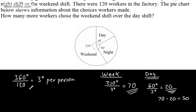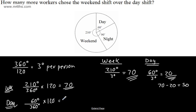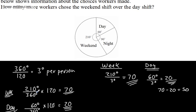Alternatively, you could use fractions. For the weekend: 210 over 360 multiplied by 120 gives 70. For the day shift: 60 over 360 simplifies to one sixth, and one sixth of 120 gives 20. So you can either work out how many degrees represents each person, or treat each sector as a fraction of the total and multiply by the number of workers.